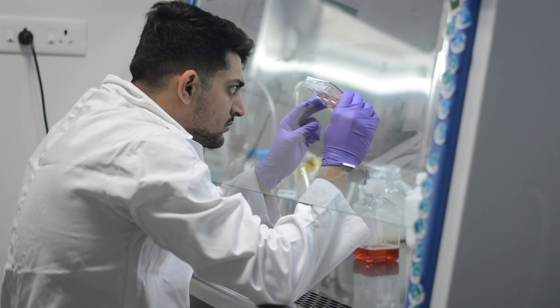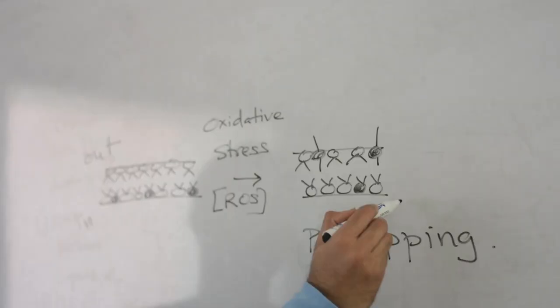Now what the chemical genetic screen enabled us to do was to find inhibitors that would inhibit enzymes which can metabolize oxidized phosphatidylserine in different mammalian cells.